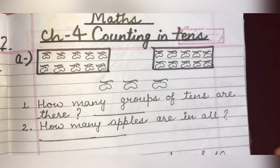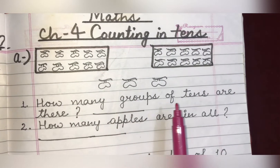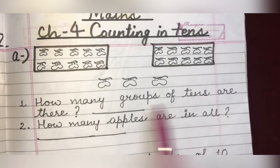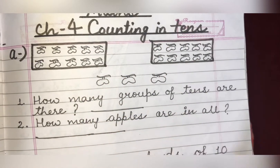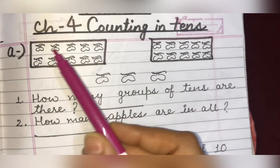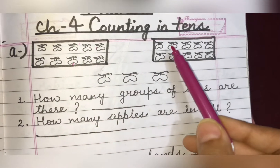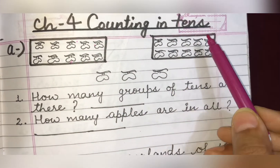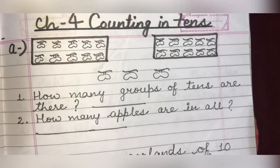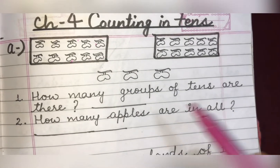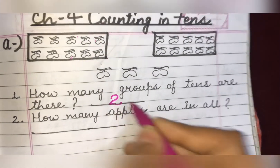The first question we have is: how many groups of 10s are there? We count 1, 2, 3, 4, 5, 6, 7, 8, 9, 10 — one group — then 1, 2, 3, 4, 5, 6, 7, 8, 9, 10 — a second group. So 2 groups of 10s are there. We simply write 2.